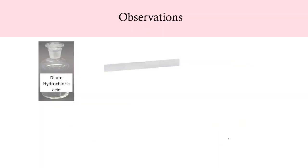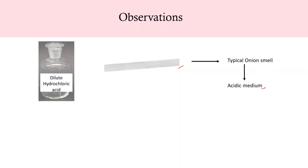Now take two strips from this plastic bag, then add a few drops of dilute HCl solution on one strip. The smell of the strip is the typical onion smell. By this we conclude that the smell of onion remains the same in acidic medium.